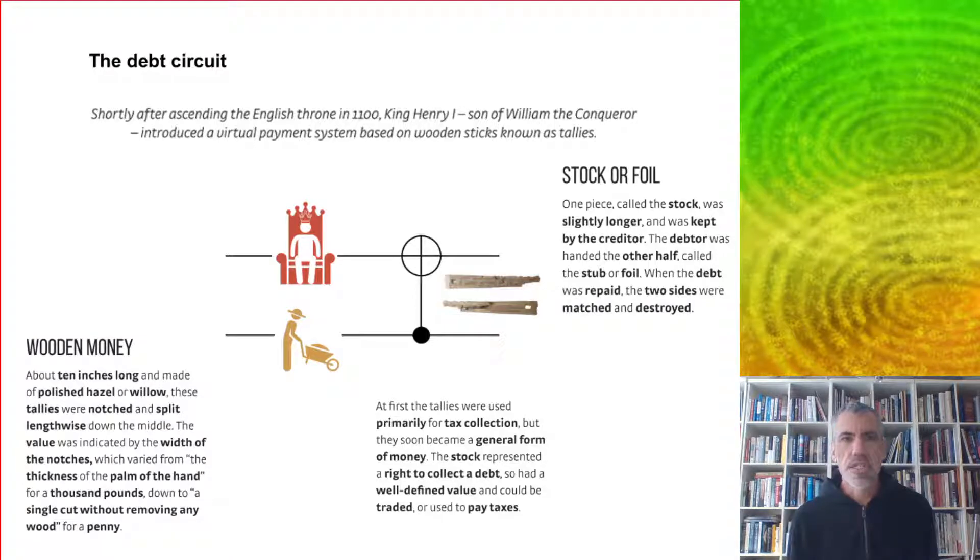An early example of a debt-based form of money was the tallies, which were used in medieval England. What would happen is a sovereign wanted to collect a tax debt. They would prepare a stick, mark it with the value of the debt, and then split it down the middle. The sovereign would keep the longer version called the stock, and hand the debtor the shorter piece called the foil. When the debt was repaid in the form of produce or whatever, the two sides of the stick were matched and destroyed to extinguish the debt.